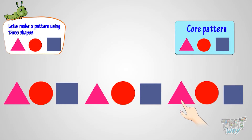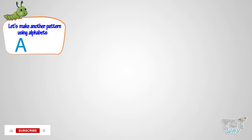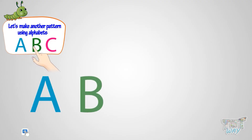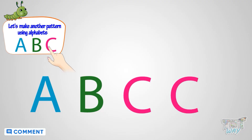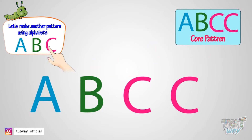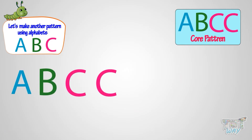Now let's make another pattern using alphabets: A, B, and C. Let's first write A, then B, then C, C. So the core pattern will be A, B, C, C.